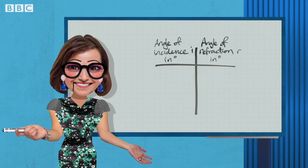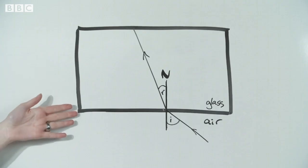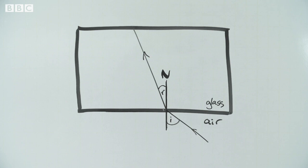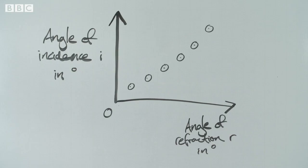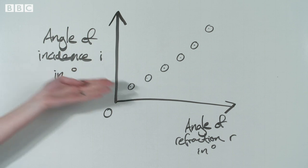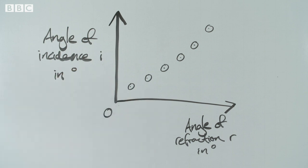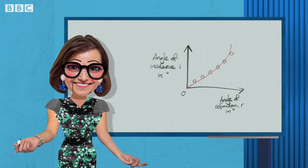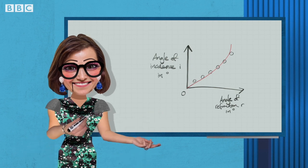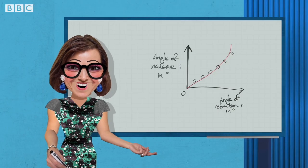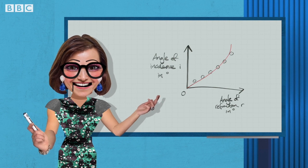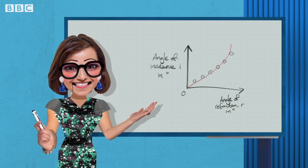We then repeat the procedure for each of the incident rays. Record each angle of incidence and corresponding angle of refraction in the results table. Now, we can plot a graph of I against R and draw a curve of best fit. The graph shows that as the angle of incidence I increases, the angle of refraction R increases. They are related but not directly proportional as the line of best fit is not a straight line.